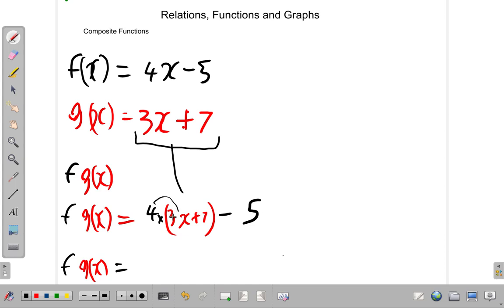4 multiplied by 3x is going to be 12x, plus 4 multiplied by 7 is 28, minus 5. So that gives us 12x plus 28 minus 5. 28 minus 5 is 23, so we have 12x plus 23.